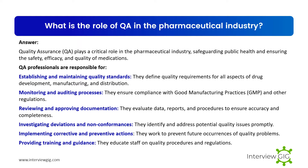QA responsibilities also include monitoring and auditing processes to ensure compliance with good manufacturing practices (GMP) and other regulations; reviewing and approving documentation by evaluating data, reports, and procedures to ensure accuracy and completeness; investigating deviations and non-conformances to identify and address potential quality issues promptly; implementing corrective and preventive actions to prevent future quality problems; and providing training and guidance to educate staff on quality procedures and regulations.